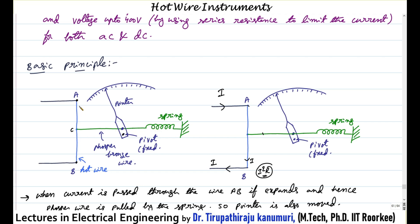Under normal conditions, the length AB is stiff. When the current I is passed through this wire, because of the current there will be I square R loss. Because of this, the temperature of the material increases, and when the temperature is increased, the wire will start expanding, getting a sag of S.